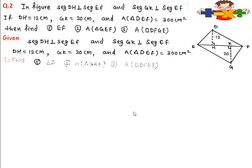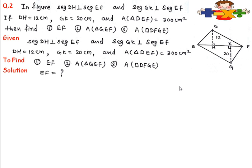So first, given that DH is perpendicular on EF and GK is perpendicular on EF. The sides are given: DH is 12, GK is 20, and the area of triangle DEF is 300. We have to find EF, we have to find the area of triangle GEF, and we have to find the area of the quadrilateral. The area of the quadrilateral will be the area of the first triangle plus the area of the second triangle.